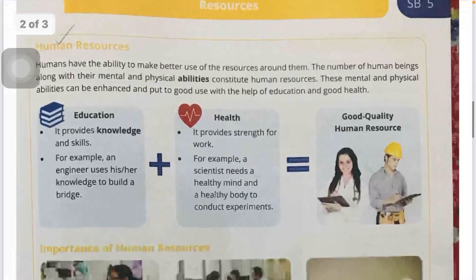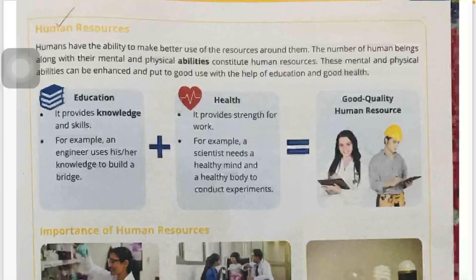Next is human resources. People who have skills and knowledge are called human resources. Humans have the ability to use resources effectively. There are many human beings who have strong mental and physical abilities, and when they use resources skillfully, we call them human resources.